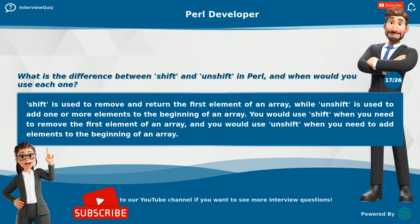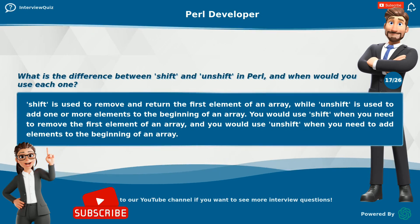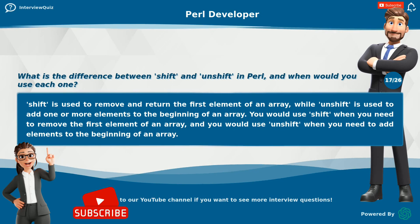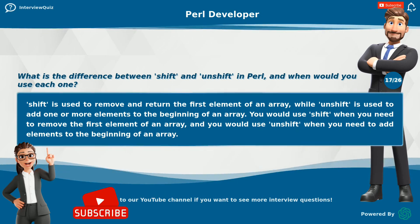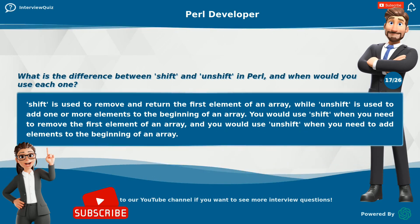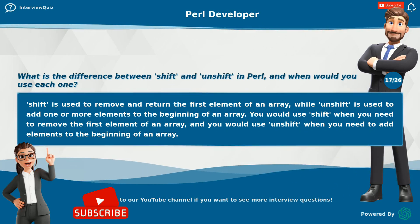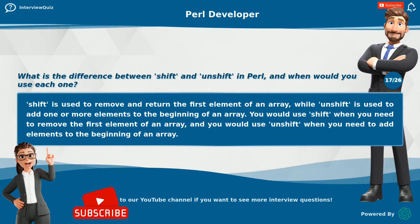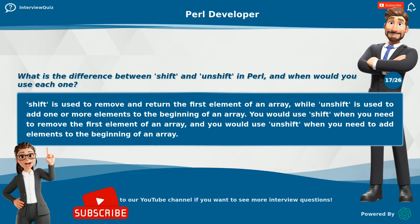What is the difference between shift and unshift in Perl, and when would you use each one? shift is used to remove and return the first element of an array, while unshift is used to add one or more elements to the beginning of an array. You would use shift when you need to remove the first element, and unshift when you need to add elements to the beginning of an array.